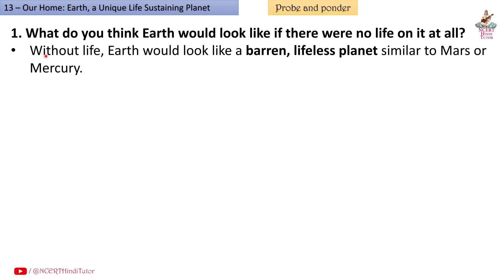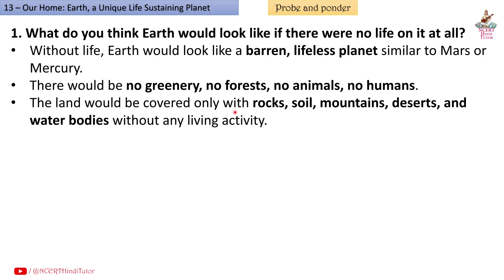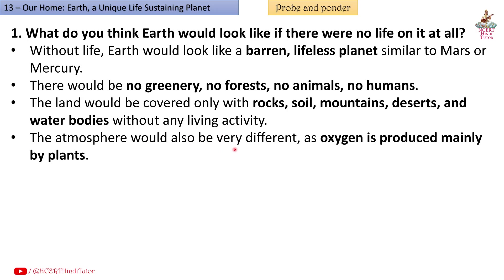Answer: Without life, Earth would look like a barren, lifeless planet similar to Mars or Mercury. There would be no greenery, no forests, no animals, no humans. The land would be covered only with rocks, soil, mountains, deserts and water bodies without any living activity. The atmosphere would also be very different as oxygen is produced mainly by plants.